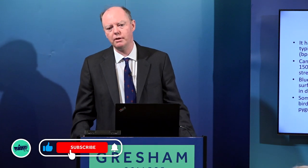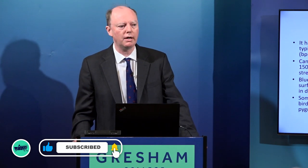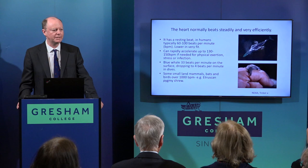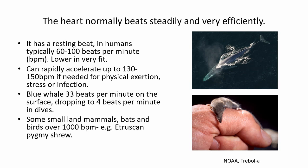The heart in every mammal and indeed birds beats with extraordinary regularity. It's a quite extraordinary mechanism by which it does that, and in humans it has a very steady beat, usually somewhere between 60 and 100 beats per minute at rest. If people are extremely fit athletes it will go slower than that, so there's a variety of possibilities.